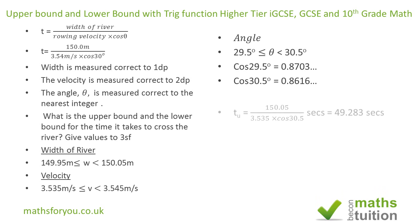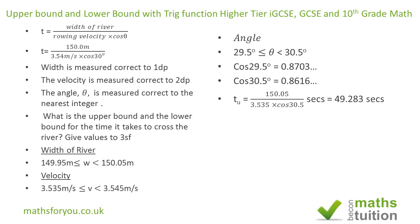For the upper bound time T_u, because we have a fraction, the numerator must be the maximum value: 150.05. The denominator must be the minimum values: 3.535 multiplied by cos 30.5°, since cos 30.5° is less than cos 29.5°. This gives 49.283 seconds, which to 3 significant figures is 49.3 seconds.